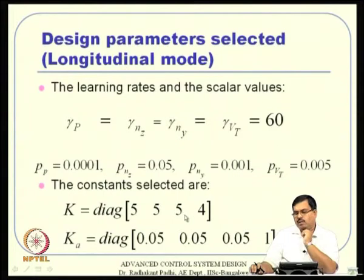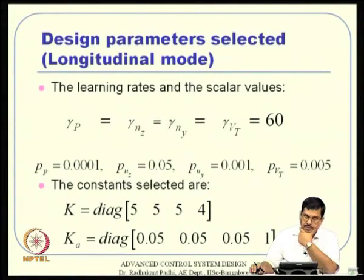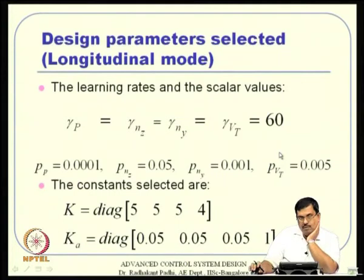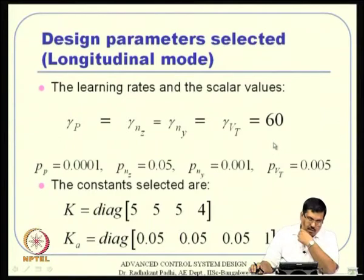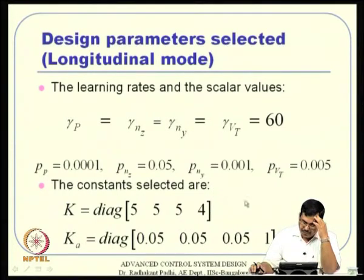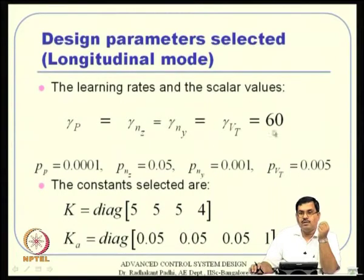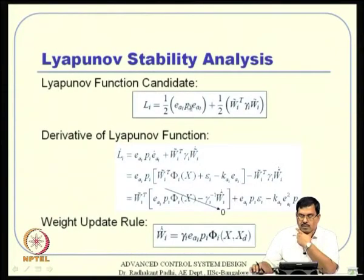Gaussian basis functions are selected with sigma values of 0.1, 1, and 10, giving nine basis functions per channel, each with an associated weight integrated in parallel. Design tuning parameters are selected once through experimentation and then kept fixed — they should not vary from case to case. The p values (error weighting) are smaller than gamma values, meaning the Lyapunov error minimization term is weighted more heavily.